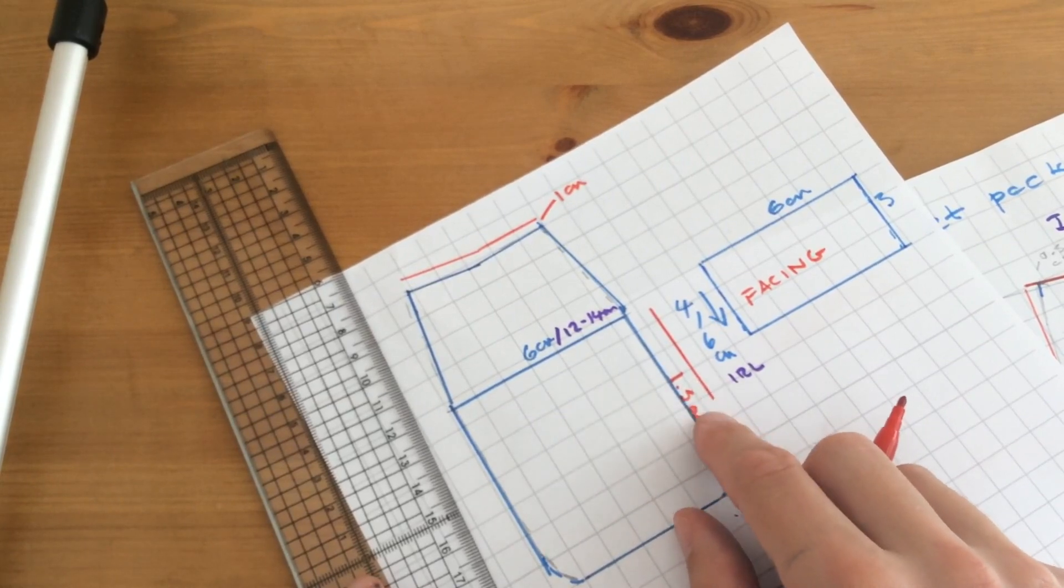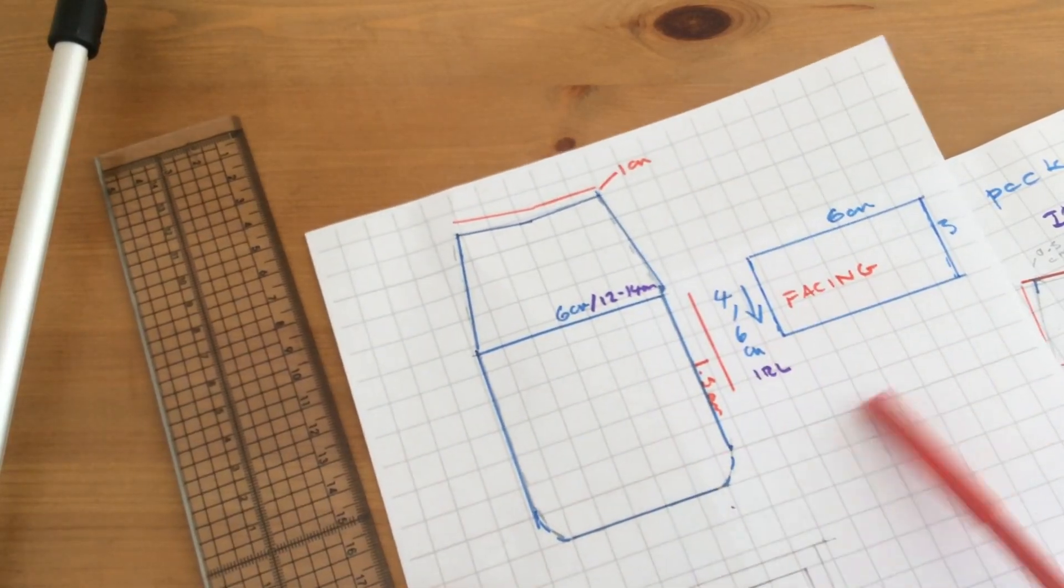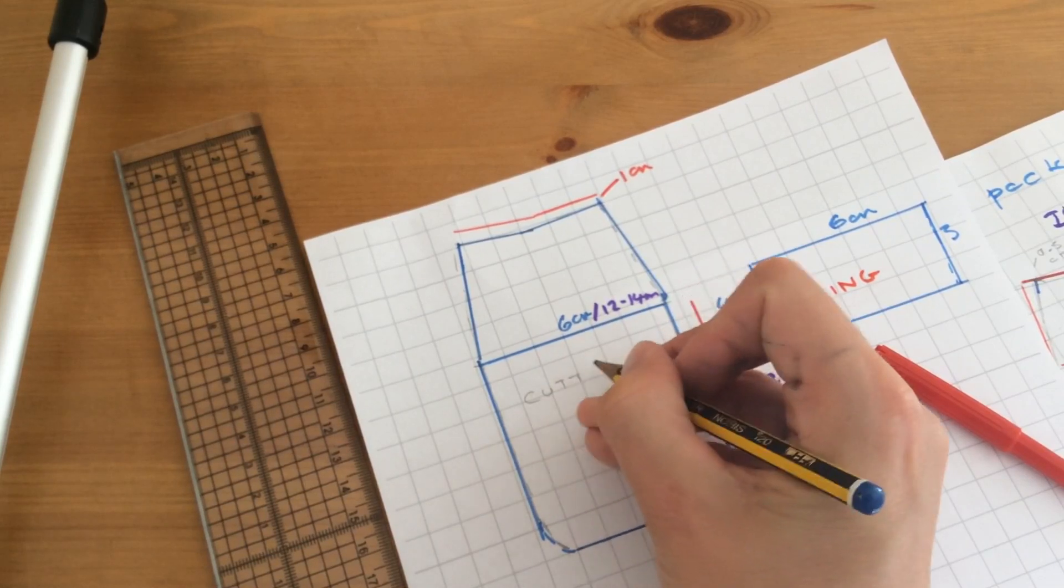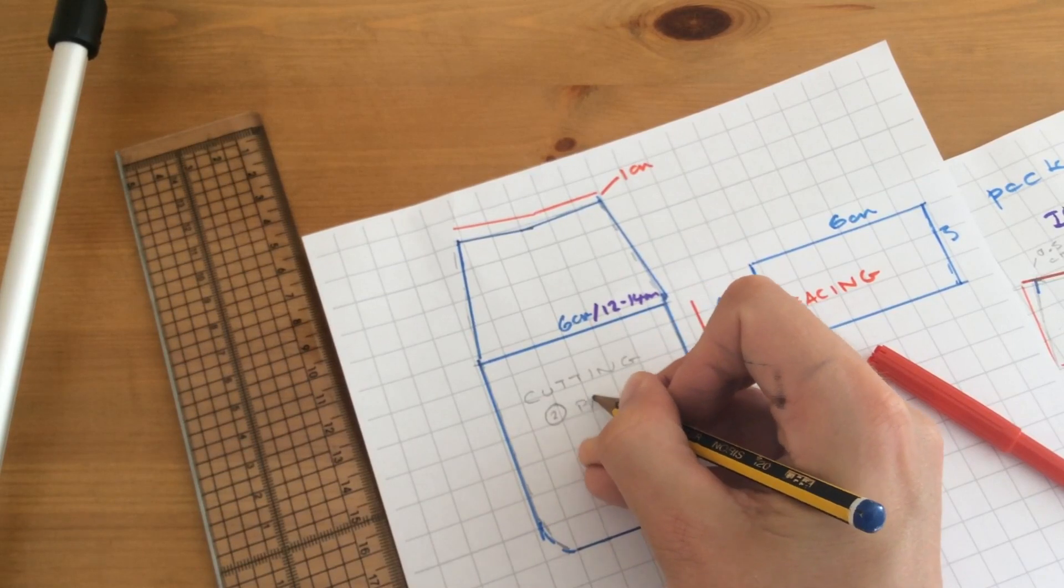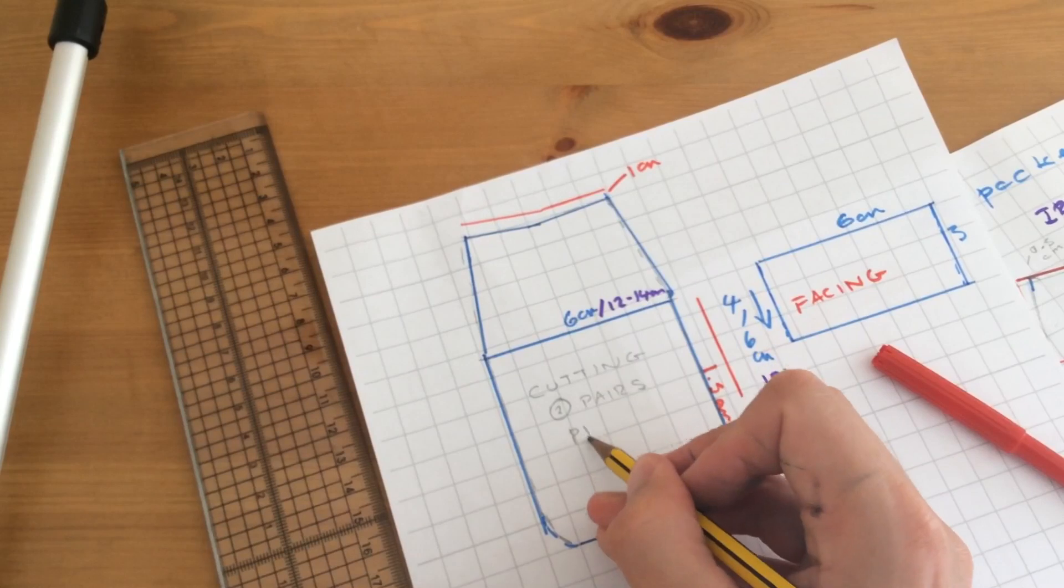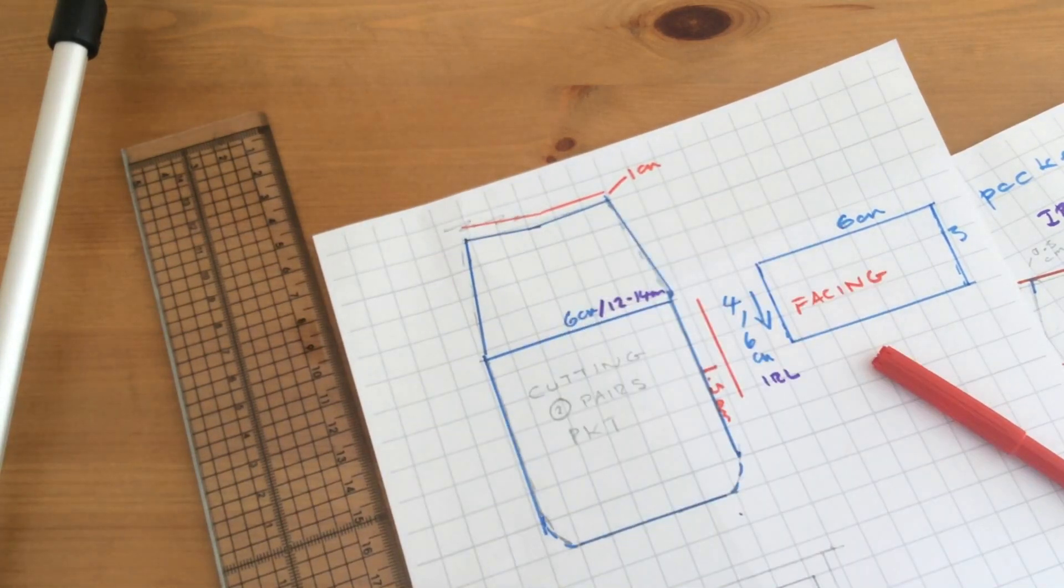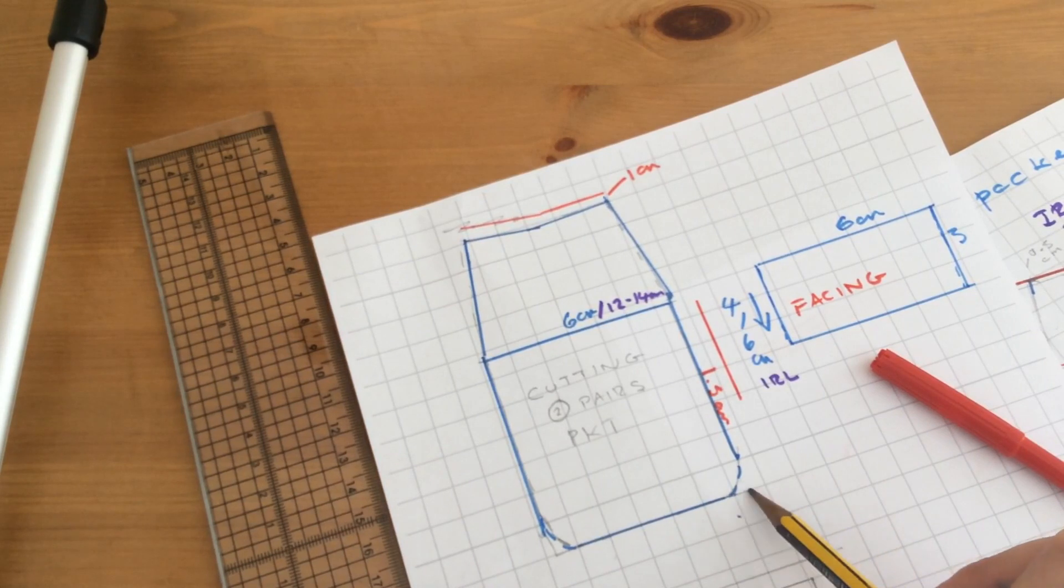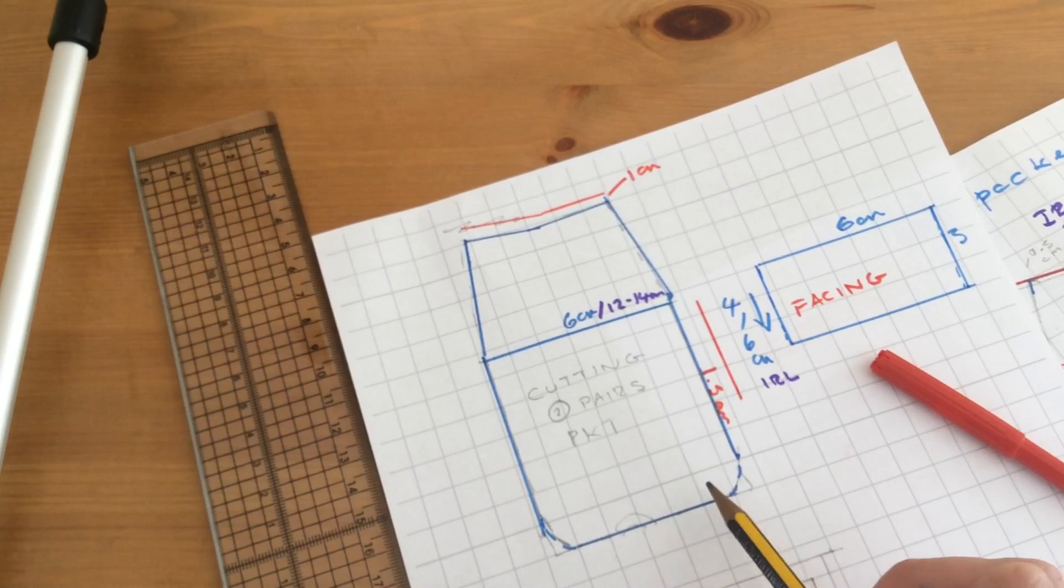And also because this is curved, we would be cutting two pairs in pocketing. That really offends me. If you had squares you could cut them on the fold, but you can only do that in a lined garment.